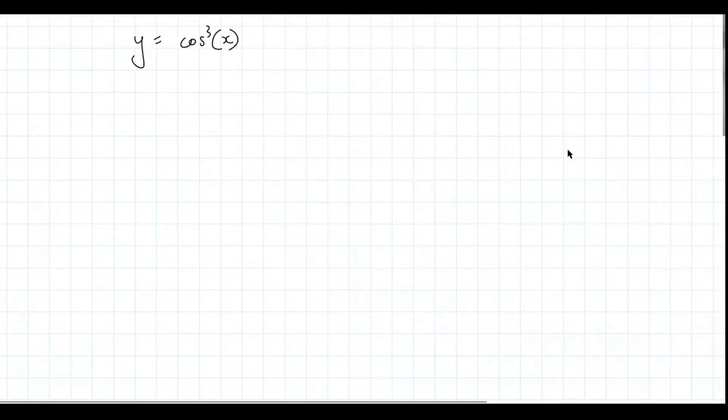Y equals cos cubed to the x and you want to derive that, right? So first, like how did you go about this? The only thing that's confusing me is how the cos is cubed.